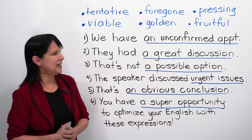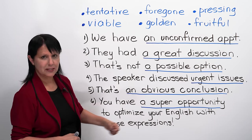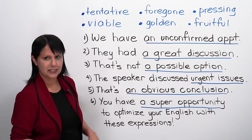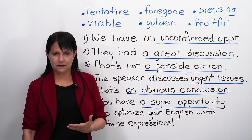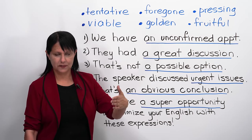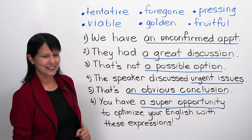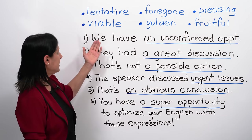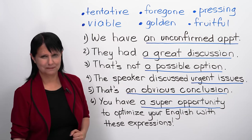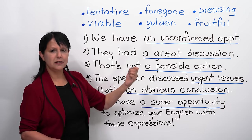So, now, let's practice. So, here we have the adjectives that are part of the expression that we learned, and here we have some sentences. So, let me just go over which adjectives we have, and then you can help me to fill them in to the sentences. The first one, tentative. Now, there are two ways to pronounce this word, by the way. You can say these T's, tentative or tentative. Next. Foregone. Pressing. Viable. Golden. Fruitful. All right. Let's get started. Number one, we have an unconfirmed appointment.